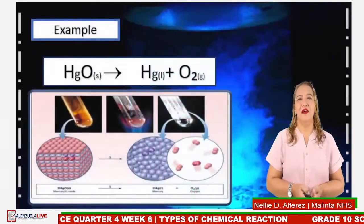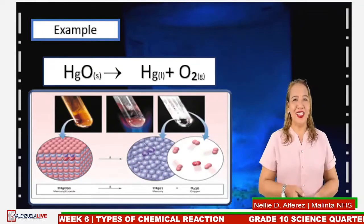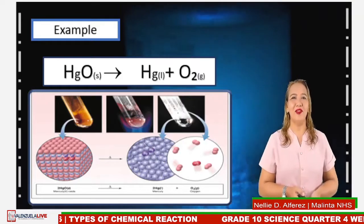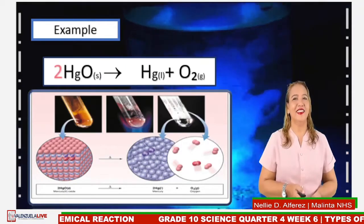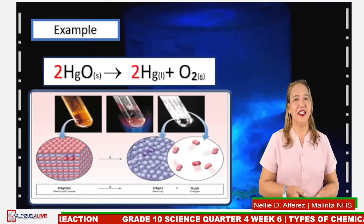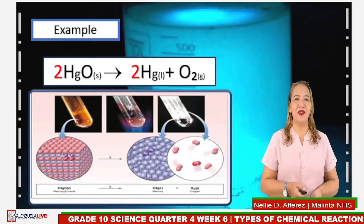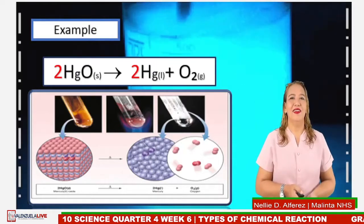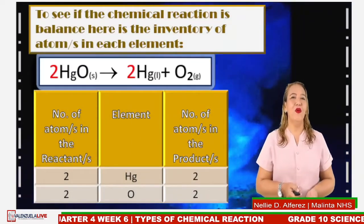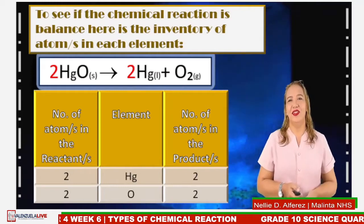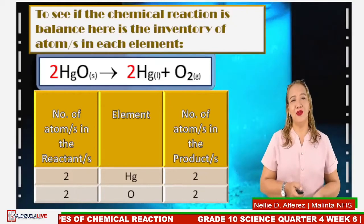For example, mercury(II) oxide breaks down into mercury and oxygen. Notice that the equation is not balanced, so we have to balance it by adding coefficient 2 to the reactant mercury(II) oxide, and another coefficient 2 to mercury on the product side. Mercury on the reactant side is 2 and on the product side is 2; oxygen on the reactant side is 2 and on the product side is 2. So they are balanced.